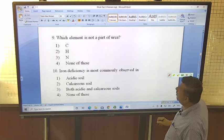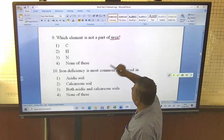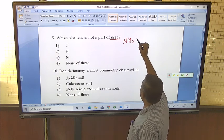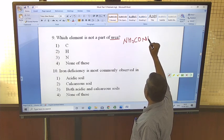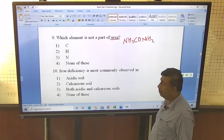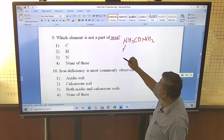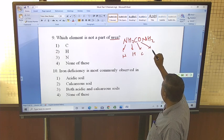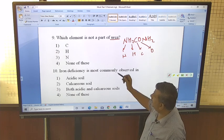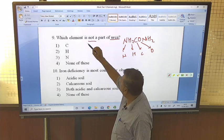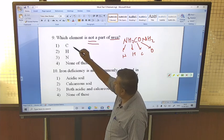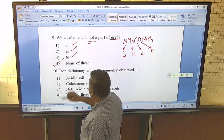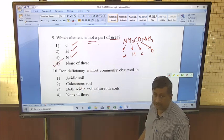Which element is not a part of urea? We should remember the formula, chemical formula of urea: NH2CONH2, this is urea chemical formula. Nitrogen is present, hydrogen is present, carbon is present and oxygen is present. And here, it is asked, is not part of urea. Carbon is present, hydrogen is present, nitrogen is present. So here, answer is none of these. All are present in urea.